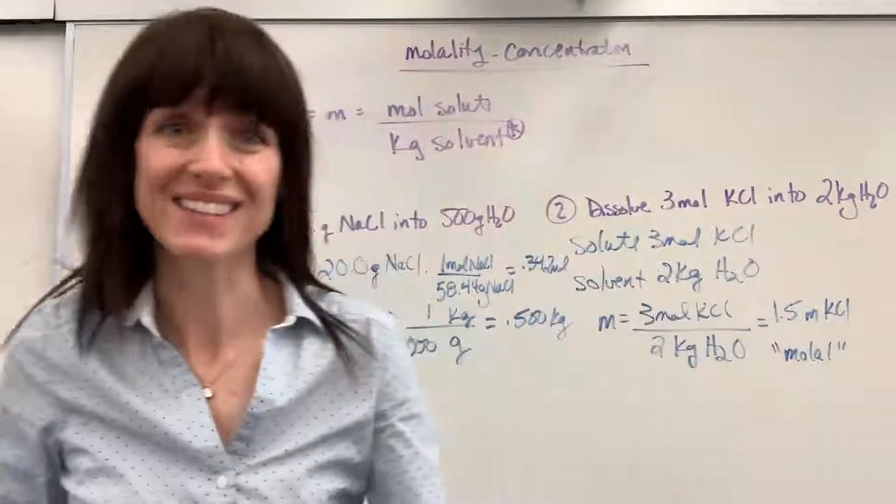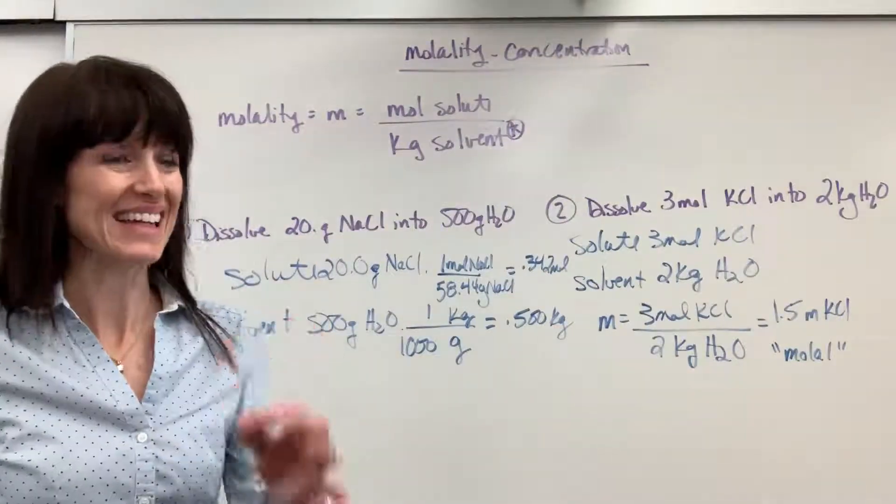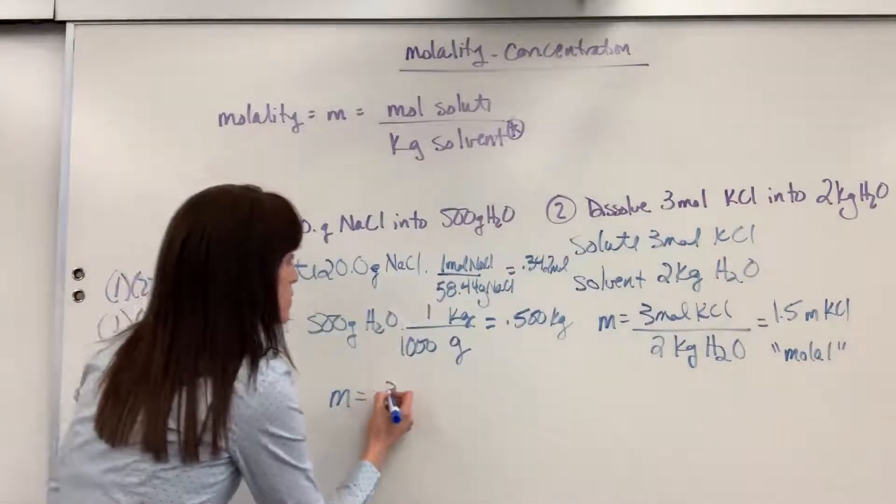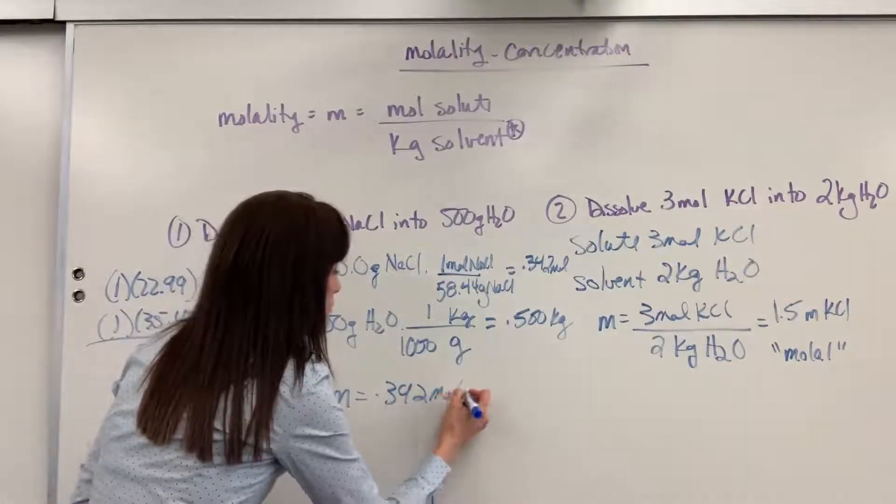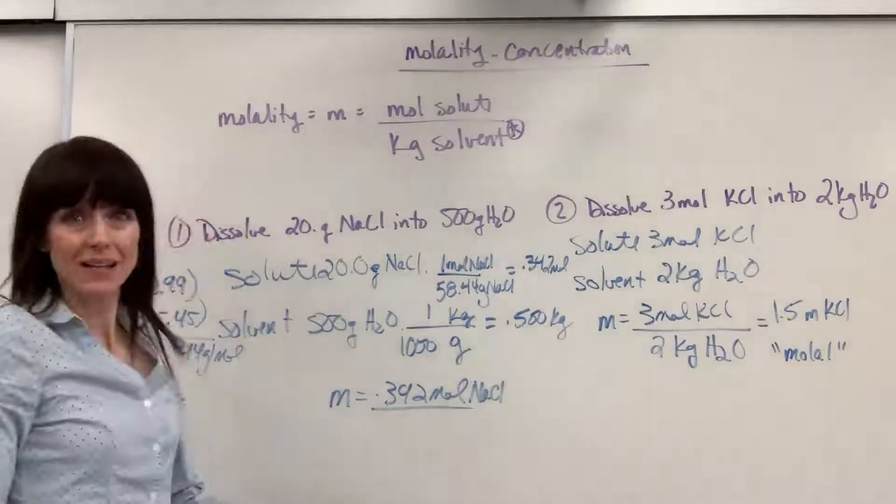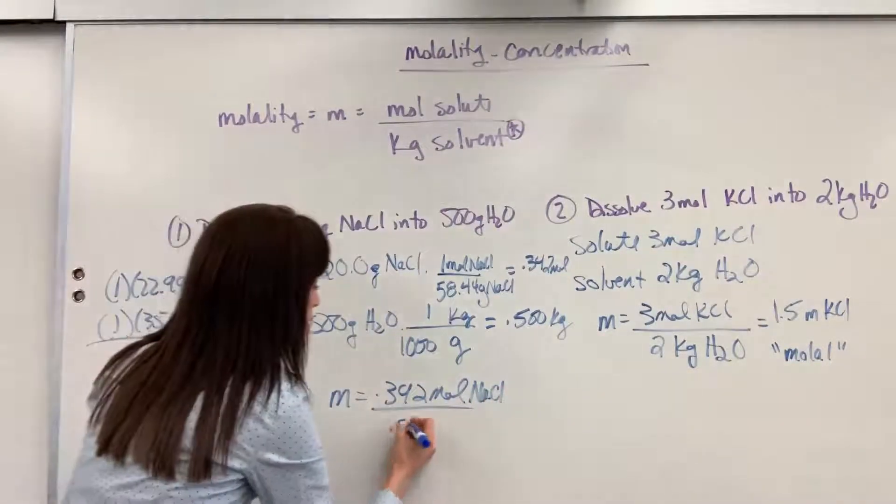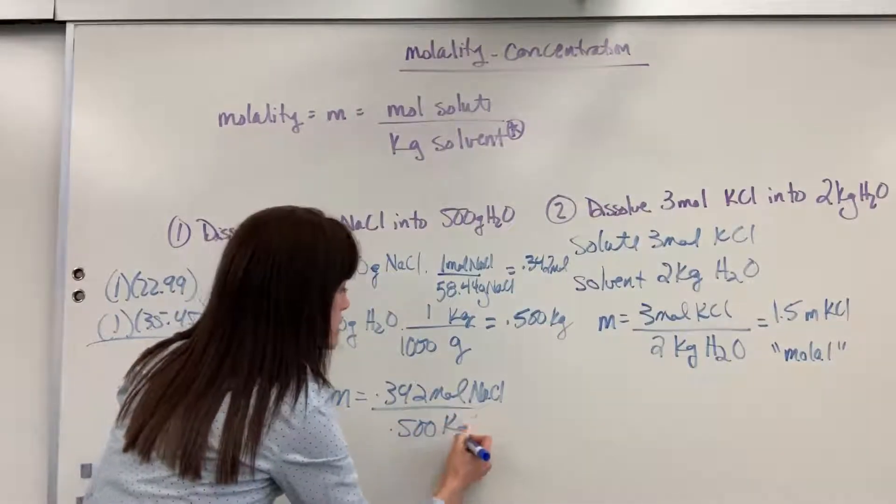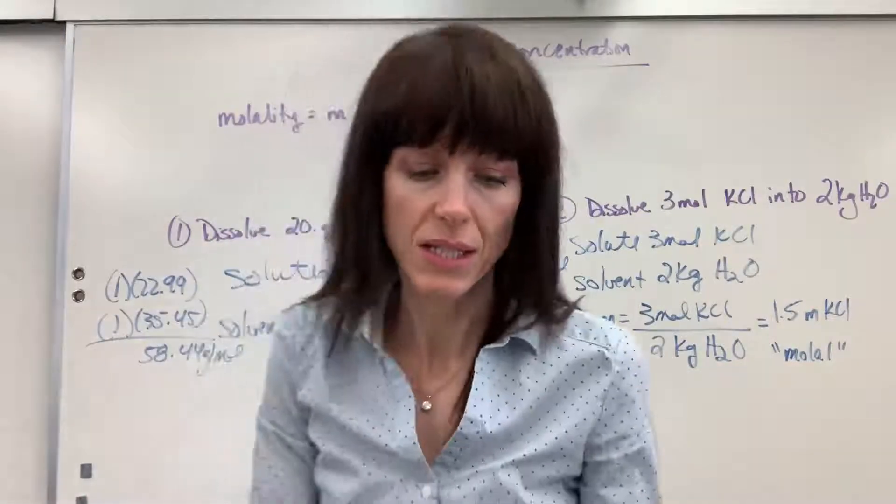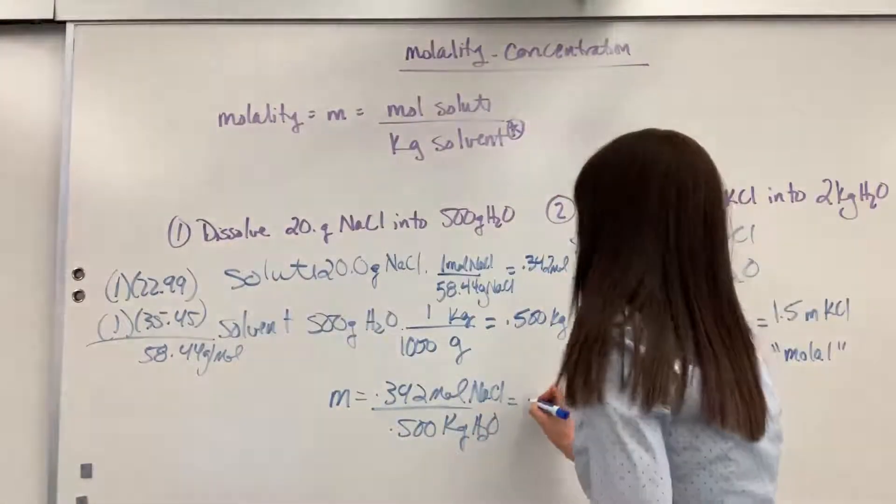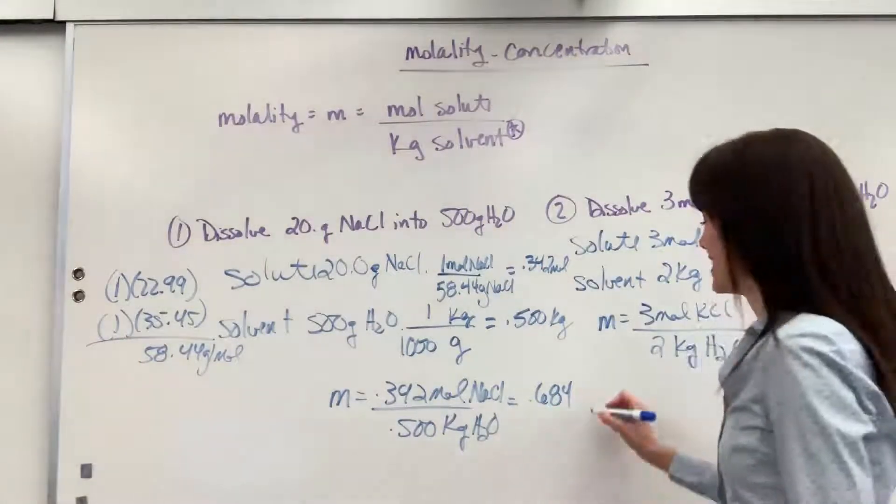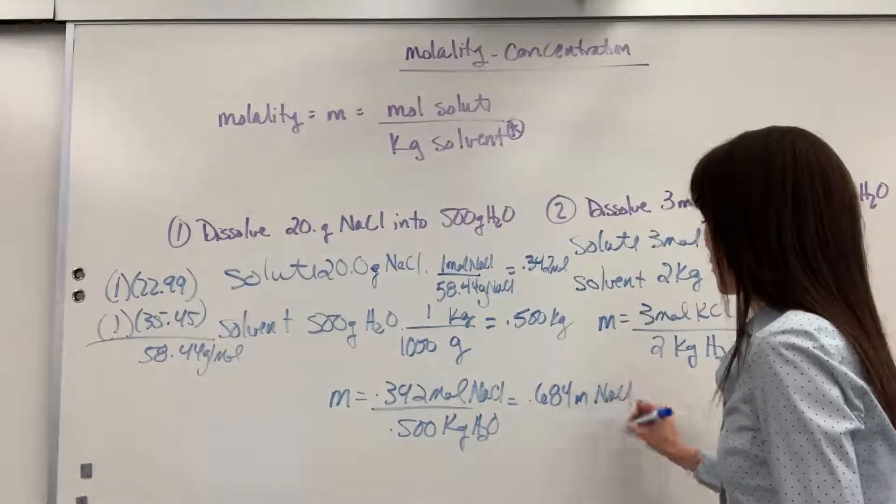So now we can put this together to find molality. So little m is going to be moles of solute, 0.342 moles. And remember, that's moles of sodium chloride. Divided by the kilograms of solvent, which was 0.5 kilograms of water. So divide that, and we are going to get 0.684 molal sodium chloride.